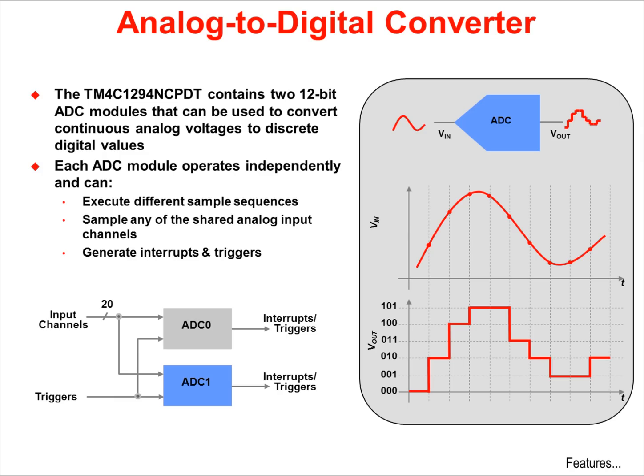The microcontroller features two ADC modules, ADC0 and ADC1, that can be used to convert continuous analog voltages to discrete digital values. Each module has 12 bits of resolution, can operate independently, and can execute different sample sequences. You can sample any of the shared analog input channels, single-ended or differential, and you can generate interrupts and triggers.